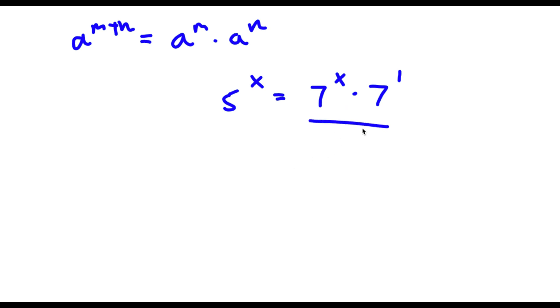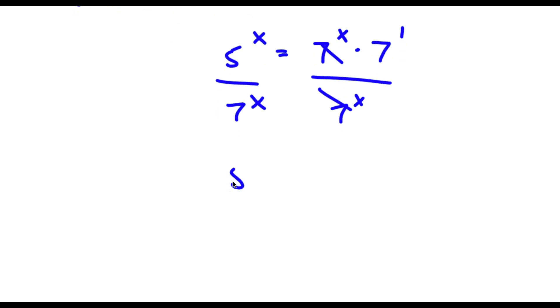Now I'm going to go ahead and divide both sides by 7 to the power of x, so then these two cancel out. Now I'll have 5 to the power of x over 7 to the power of x is equal to 7 to the power of 1.